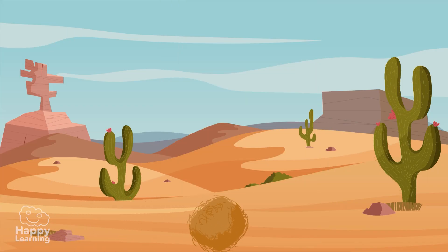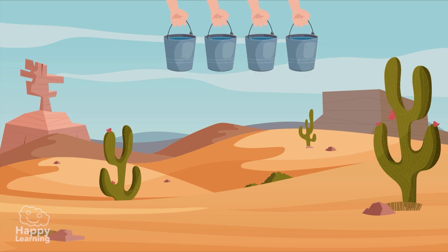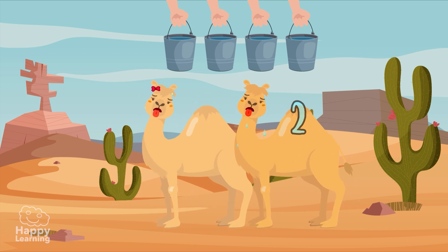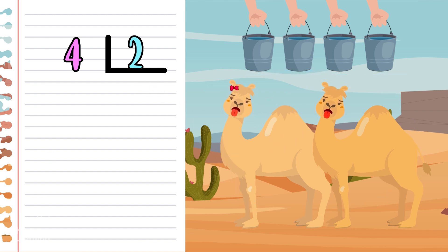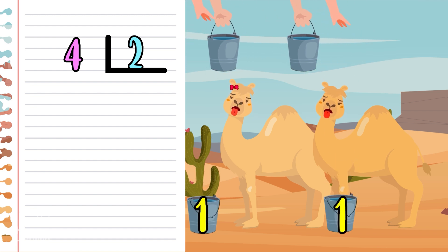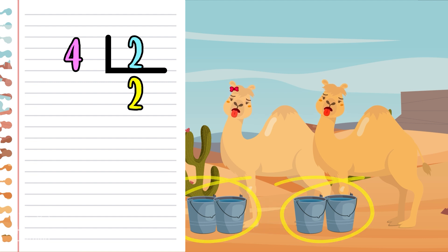If we have four buckets full of water and we have to divide them between two thirsty camels in the middle of the desert, how would we do it? We place the four, which represents the buckets to divide, and the two, which represents the camels receiving them. We divide the buckets, and each camel gets two buckets. So four divided by two is equal to two.